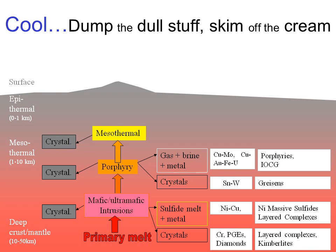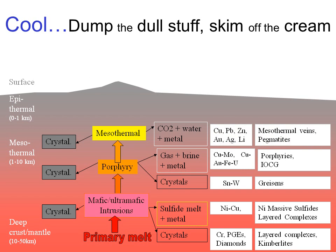Rising up further into the mesothermal domain, further crystallization occurs — at this stage we're normally talking about quartz and carbonate minerals dropping out, but of no value to us in themselves. The metals of use to us concentrate further in the melt or into either the CO₂ gases or the hydrothermal waters and brines. Copper, lead, zinc, gold, and silver are important here. In particular, copper, lead, zinc, and gold are very important in mesothermal veins — most of the greenstone deposits worldwide, which are big gold suppliers, are of this sort.